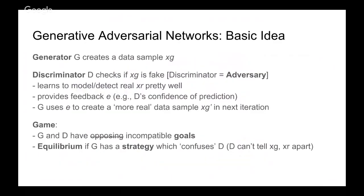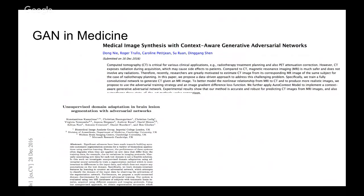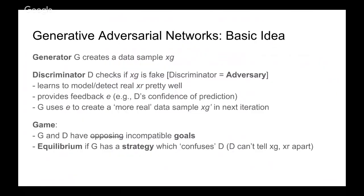Medicine is another very popular application area for GANs. For example, MRI scans are preferred to CT scans but you want CT scans — GANs can translate MRI scans to CT scans. Medicine in particular is a field where annotated data is very limited, making the ability to generate medical data extremely useful.